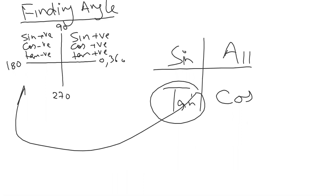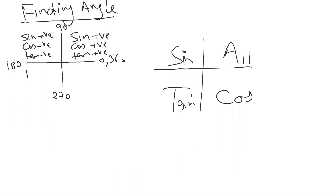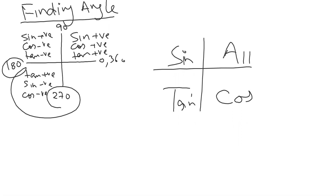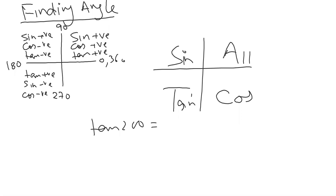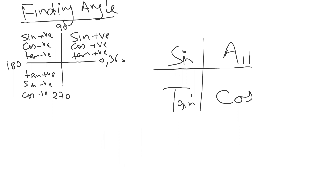In the third quadrant — from 180 to 270 — tangent is positive, while sine and cosine are both negative. Take any angle, like 200 degrees: tan 200 gives positive, sin 200 gives negative, and cos 200 gives negative. In the fourth quadrant, cosine is positive and the rest — sine and tangent — are negative.